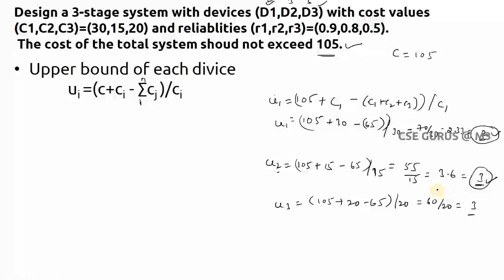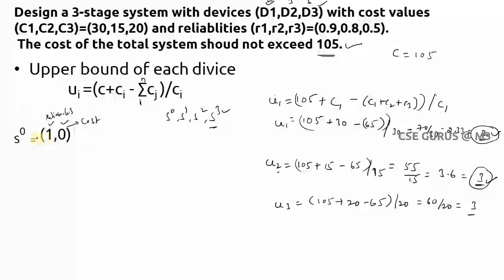Now we need to find S^0, S^1, S^2, and S^3 — one set per device stage. Each set contains pairs where the first value is reliability and the second is cost. S^0 is the initial state: no device connected, so reliability = 1 and cost = 0, giving the pair (1, 0).